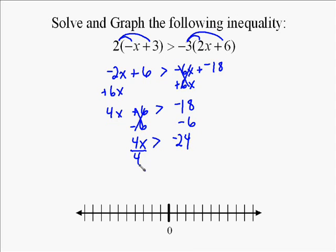Then we divide both sides by 4, and this gets the coefficient as a 1. So we're going to have x greater than, well, negative 24 divided by 4 is a negative 6.